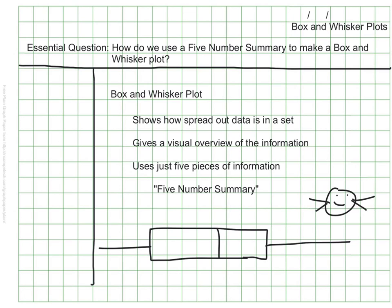So how do we make this shape — how do we create this box and these whiskers? We're going to need to talk about the five-number summary. I'm going to turn my page and we're going to write down the five parts that are in the five-number summary.